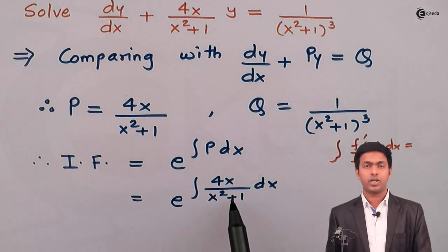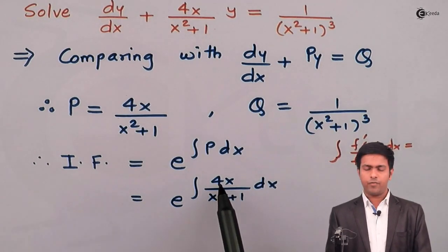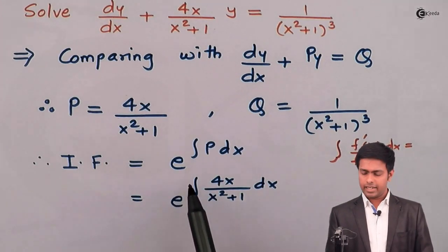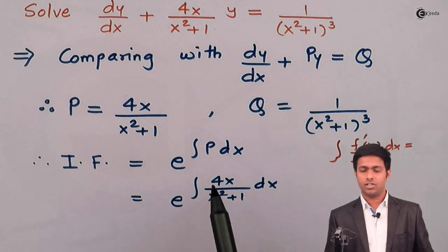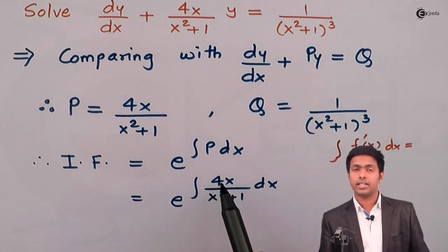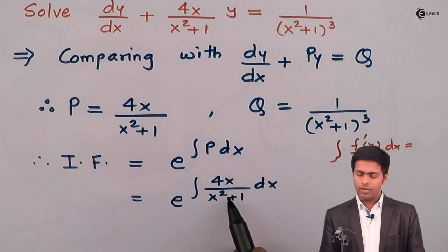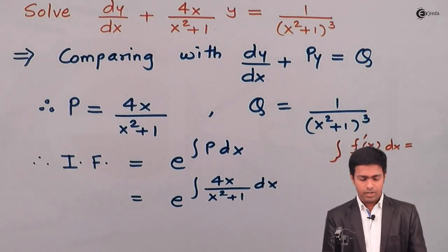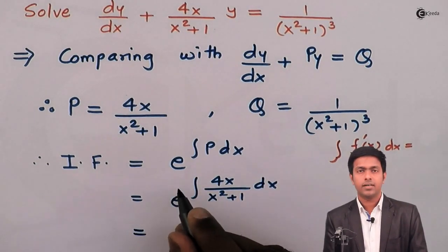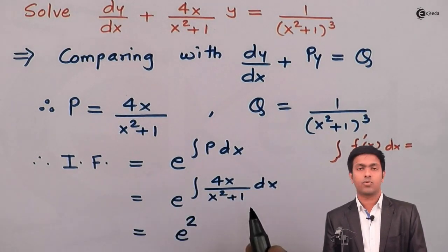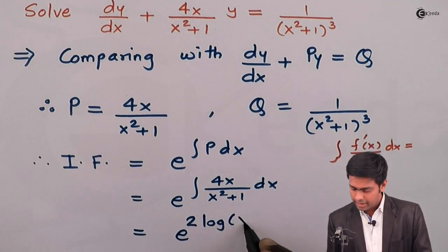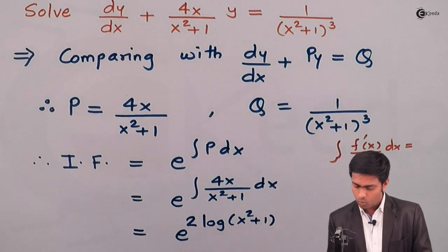The derivative of x² + 1 is 2x. Now here I have 4x, so I can take 2 outside and keep 2x inside the integration — since 2 × 2x = 4x. Once I get 2x in the numerator, I can apply this property. By this property we get e raised to 2, and 2x upon (x² + 1) gives log(x² + 1).